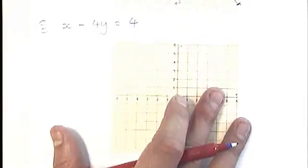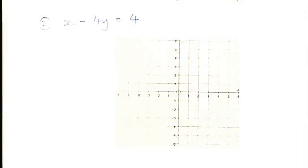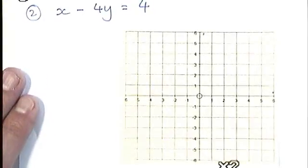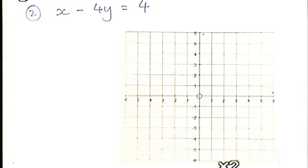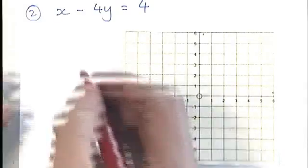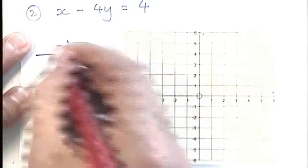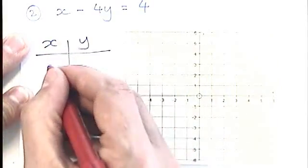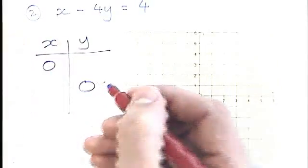Right, if we have a look at question 2 that I've got here, this one's slightly different in that it's got this negative involved, this x minus 4y equals 4. But we're going to do it in the same way. I'm going to create a little table of values here, just two values in this one, the 0 and the 0.